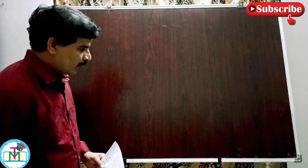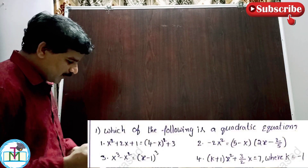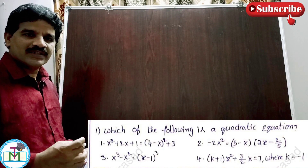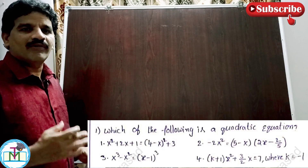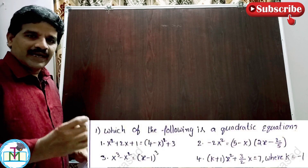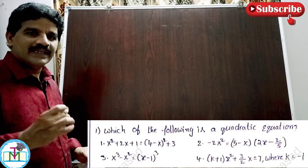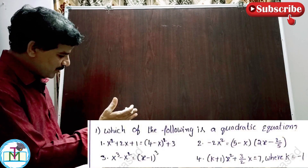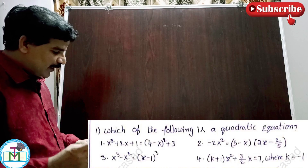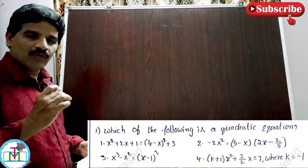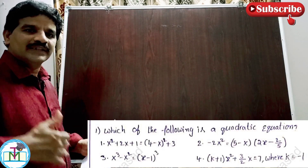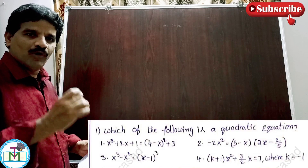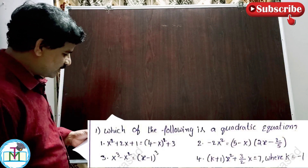Question number one: which of the following is a quadratic equation? The definition of a quadratic equation is that the highest power of x is 2 in the given equation. Whenever an equation contains the highest power of x equal to 2, it is called a quadratic equation. We have four options and we need to check each one.